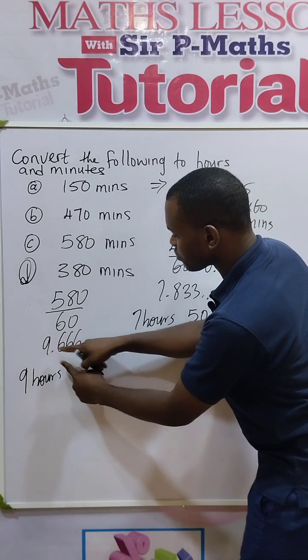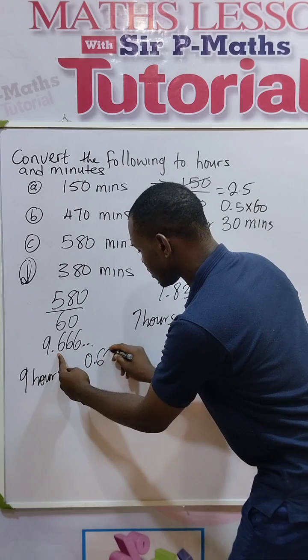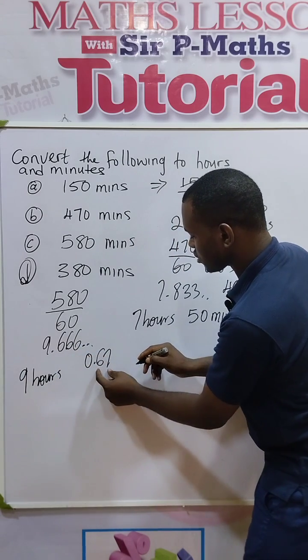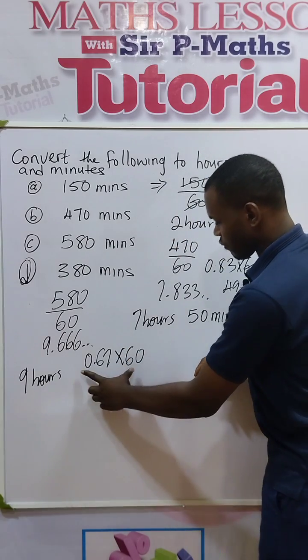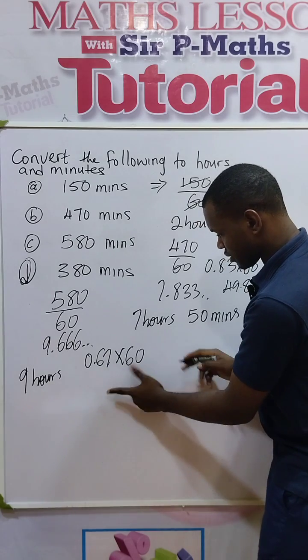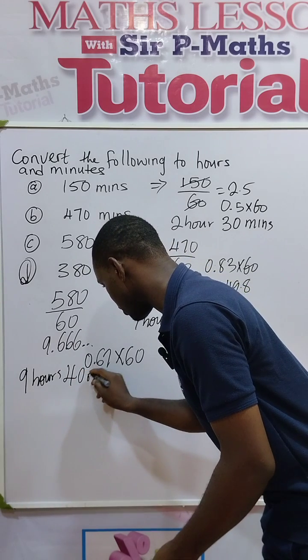Then for 0.66, approximate it to two decimal places. You have 0.67. This 6, we enter the second one, we have 67. Then multiply it by what? 60. If I multiply 0.67 by 60, I will obtain 40. So that becomes 40 minutes.